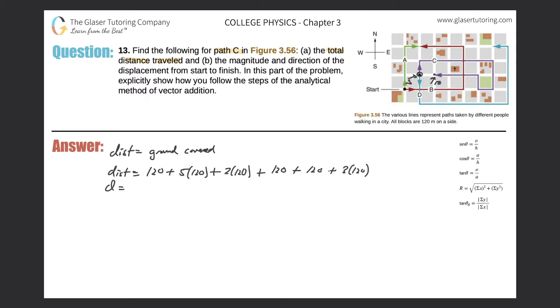And we get a value of 1560, so 1560 meters. That's the total distance, that's the total ground covered, that's what your odometer would read. Now let's take a look at the next letter.